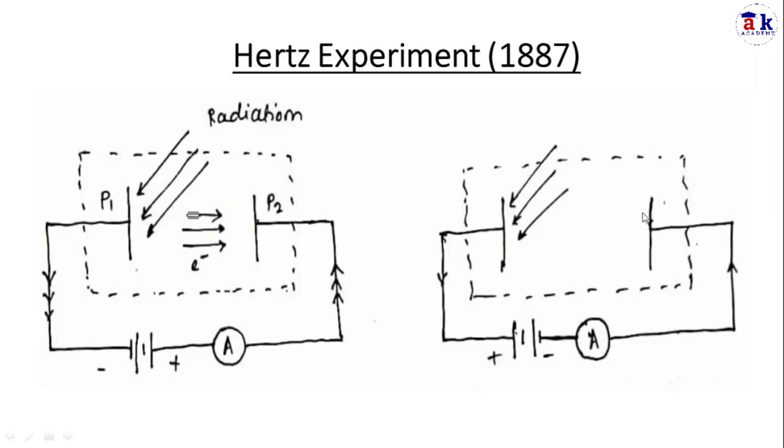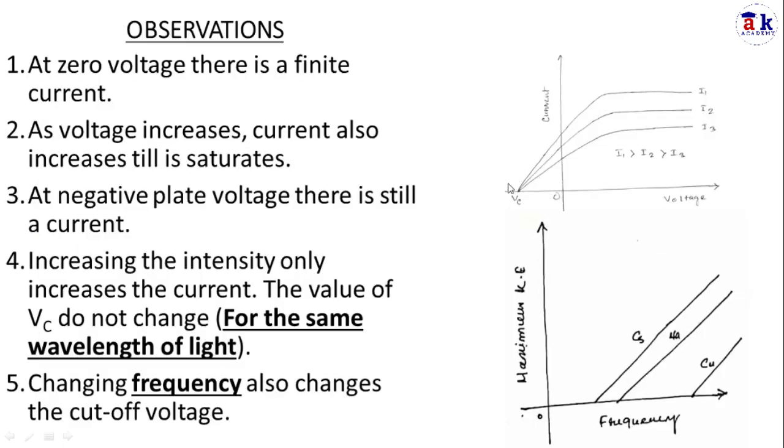So at some particular negative value we are getting zero current. This particular voltage is called stopping potential and it has some physical significance. When you have this negative potential, this cutoff potential or stopping potential gives a measure of the maximum kinetic energy of the photoelectrons.